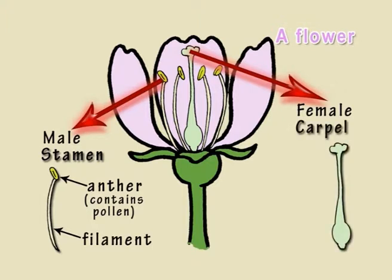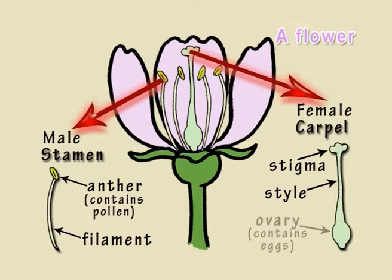The female part of the flower is called the carpel. It is made up of the stigma, which is sticky to catch pollen, the style, which holds the stigma up, and the ovary, containing eggs or ovules.